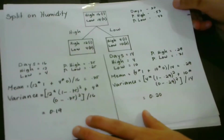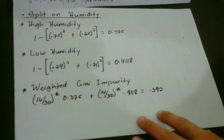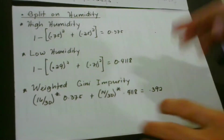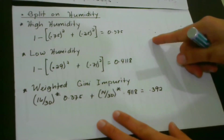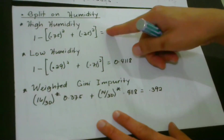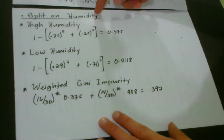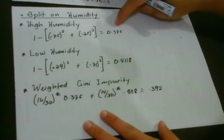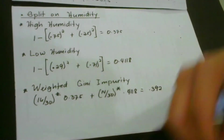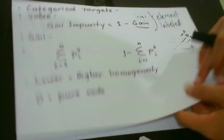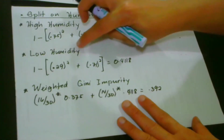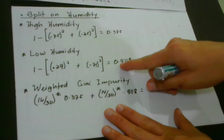Now we go to the calculation, starting with the split on humidity. The first step is to identify the impurity of high humidity. We plug in the values — 0.75 for high humidity and 0.25 for low humidity — into the formula, and the result is 0.375. For low humidity, we follow the same process, plugging in its values, and we get 0.4118.